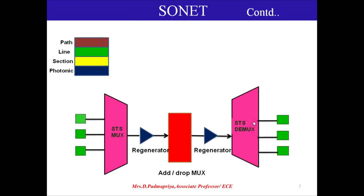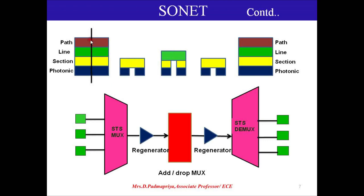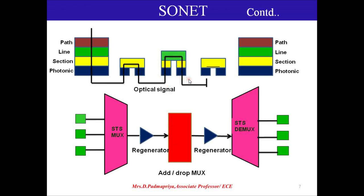This diagram shows the device-layer relationship in SONET. Communication starts from the path layer, flows down through the line layer, section layer, and photonic layer in the STS MUX. Towards the regenerating end, those two layers handle communication between the STS MUX and regenerator, and between the regenerator and add-drop mux. The optical signal flows along and reaches the destination end.